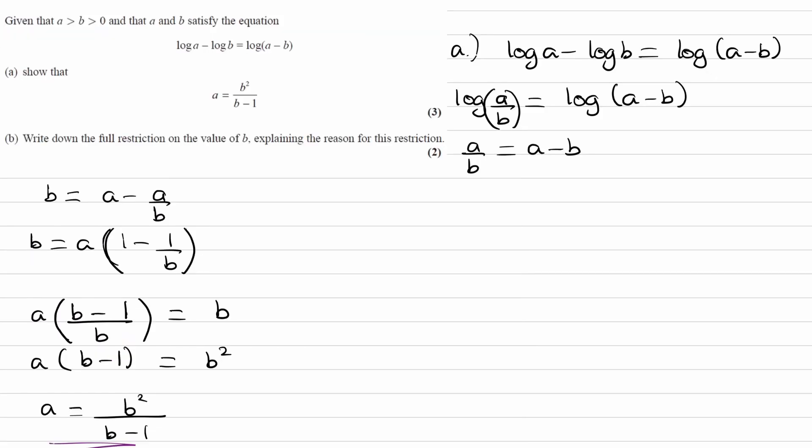So for part B, write down the full restriction on the value of B. I think this is where probably a lot of students would trip up to explain exactly what the restriction on the value of B is. We're already given some restrictions here: A is bigger than B, which is bigger than 0.